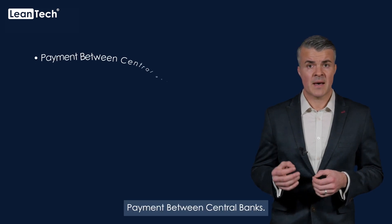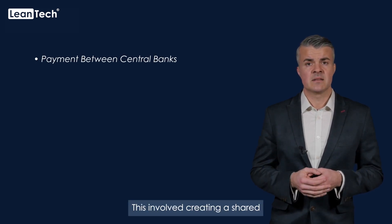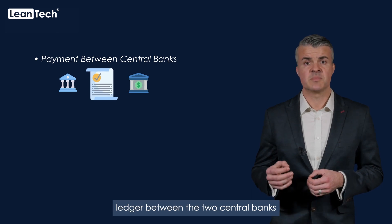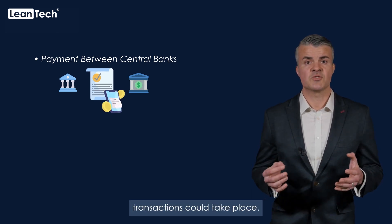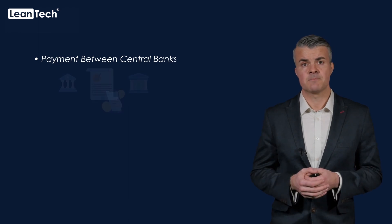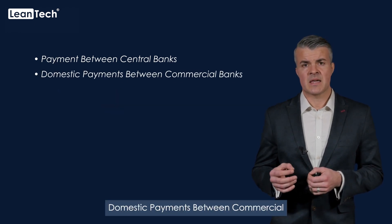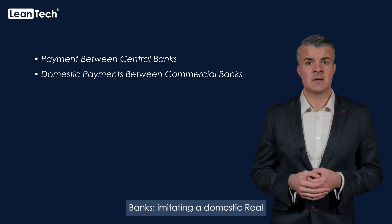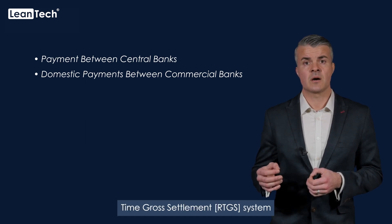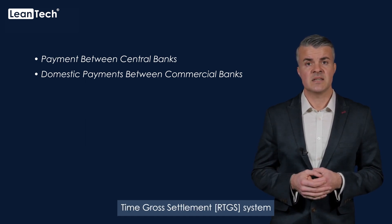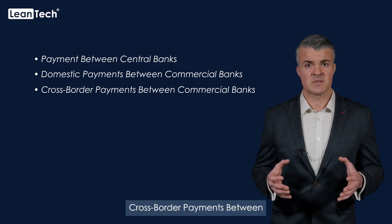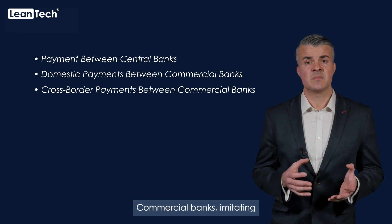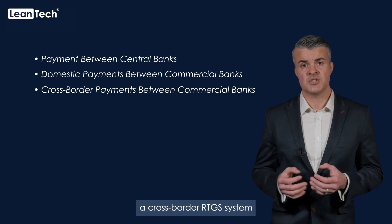The project addressed three high-level use cases executed in three phases. One: payment between central banks, involving a shared ledger between the two central banks on which various digital currency transactions could take place. Two: domestic payments between commercial banks, imitating a domestic real-time gross settlement system. Three: cross-border payments between commercial banks, imitating a cross-border RTGS system.